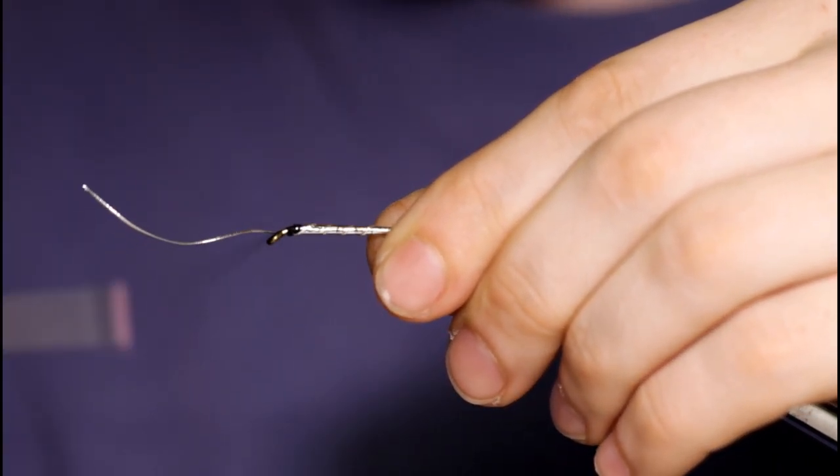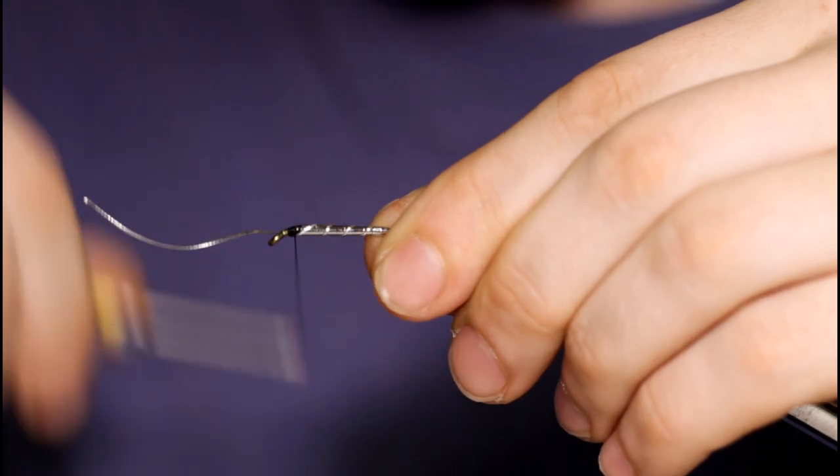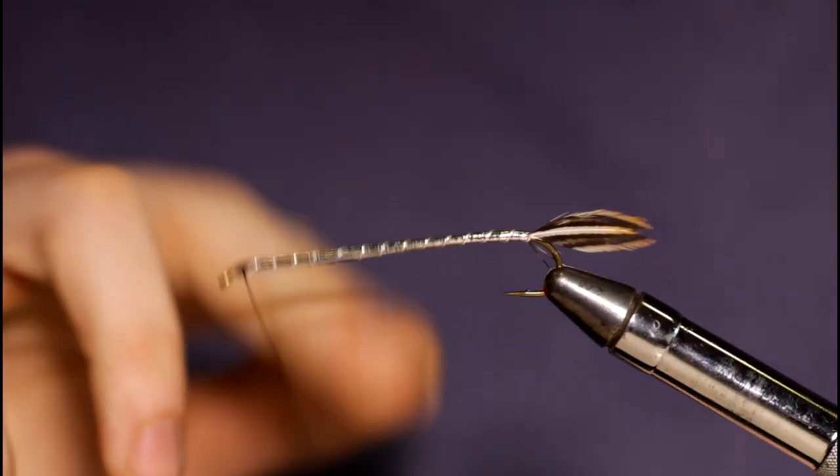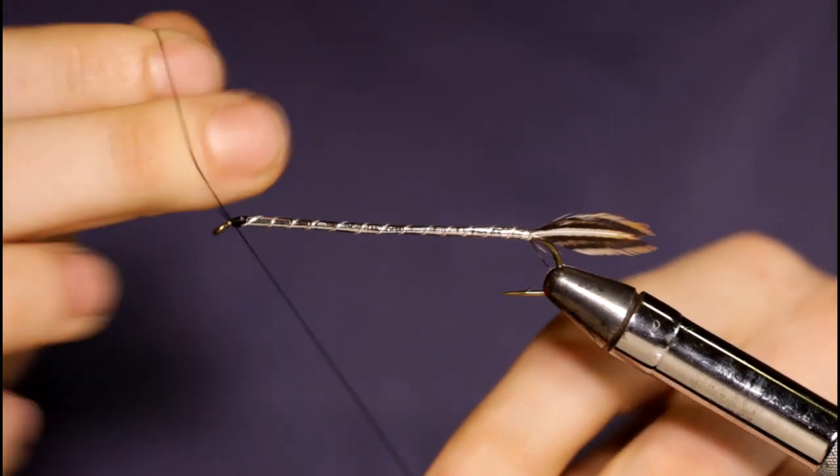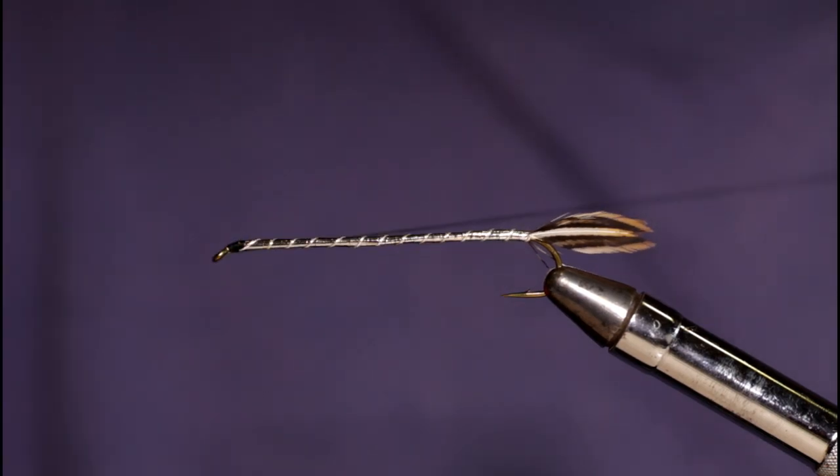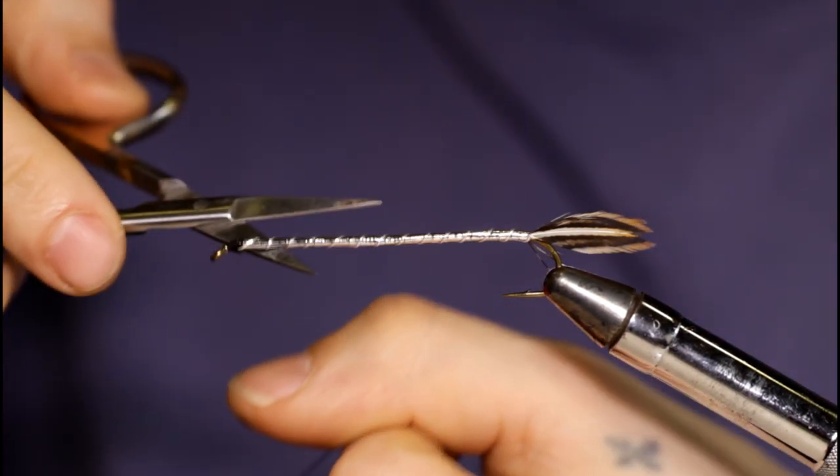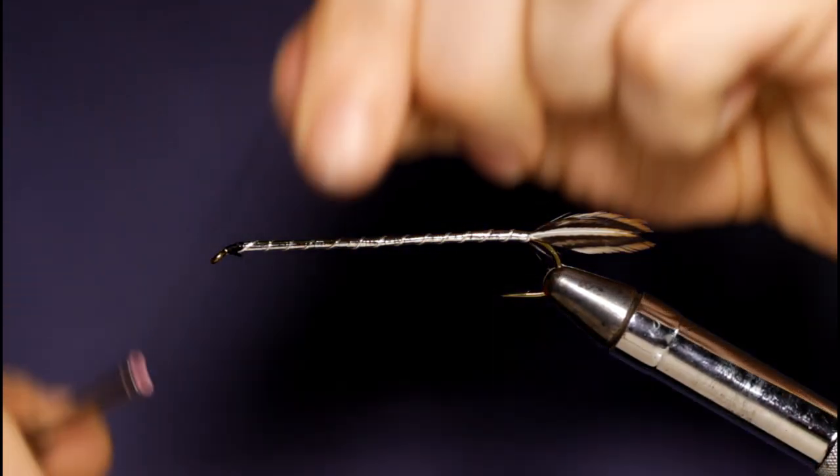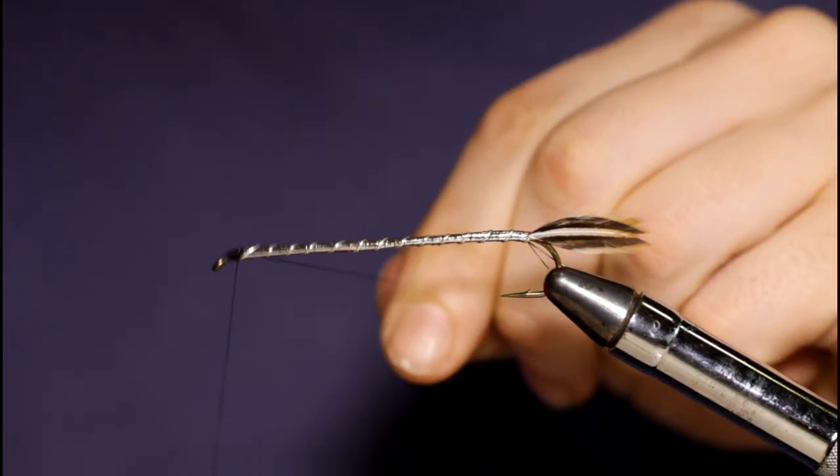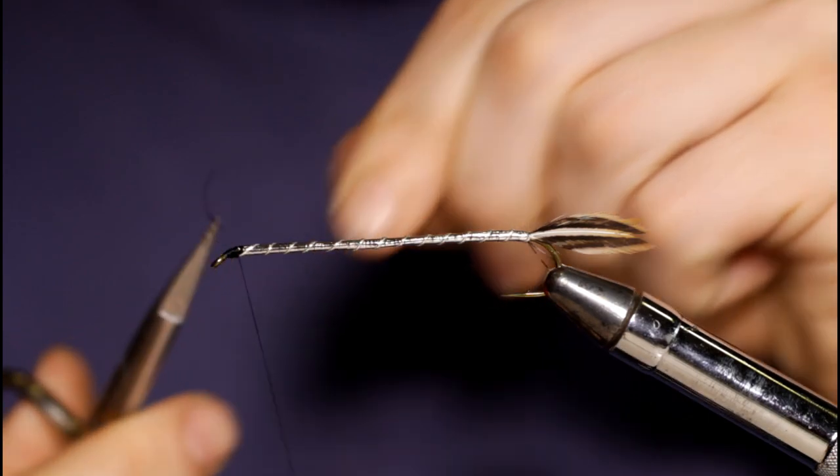A few turns to bind it down. Now I'm just going to throw a couple half hitches in and snip off the thread because I'm going to come in with some smaller thread here, some 70 denier, same color in black. Snip that tag off.